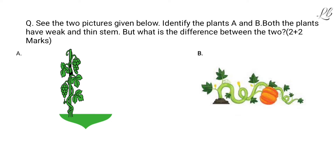Here, identification is a simple question, as you have taught climbers and creepers to the students. So they can identify A as grapevine and B as pumpkin. Now, what is the difference between the two? You have told them the features of climbers and creepers, so based on their knowledge they can tell that the first one is growing vertically and taking support — so it's a climber — and the second one is spreading its branches on the ground, so it is a creeper.